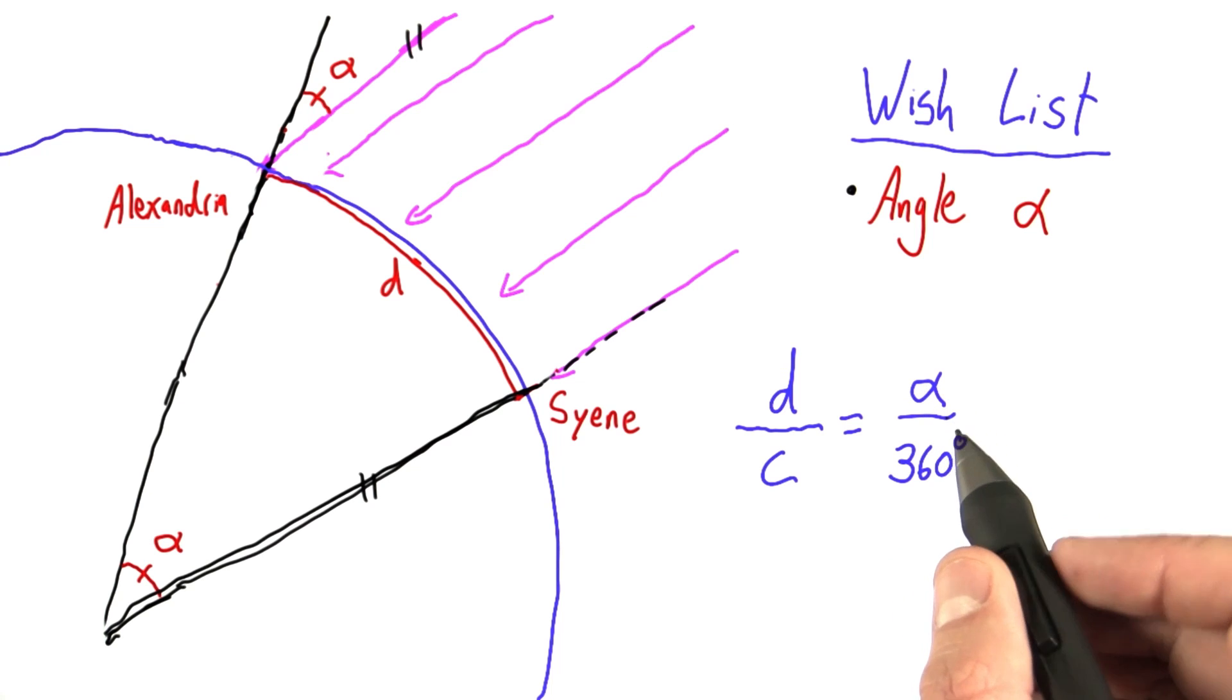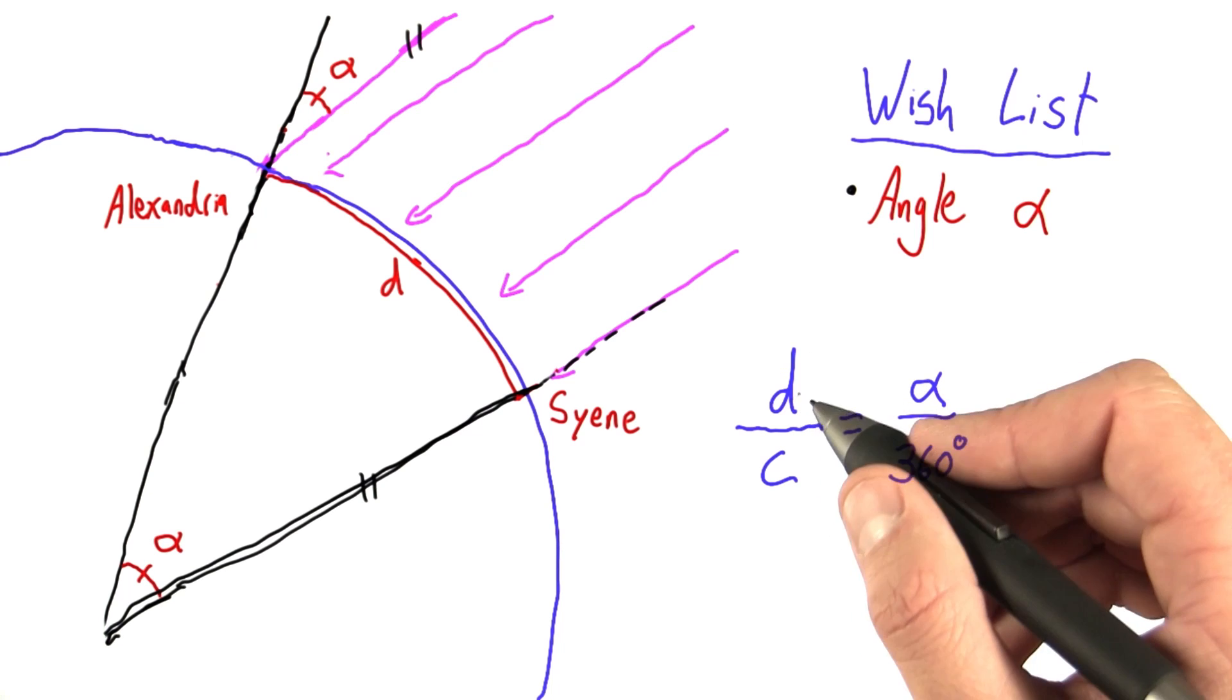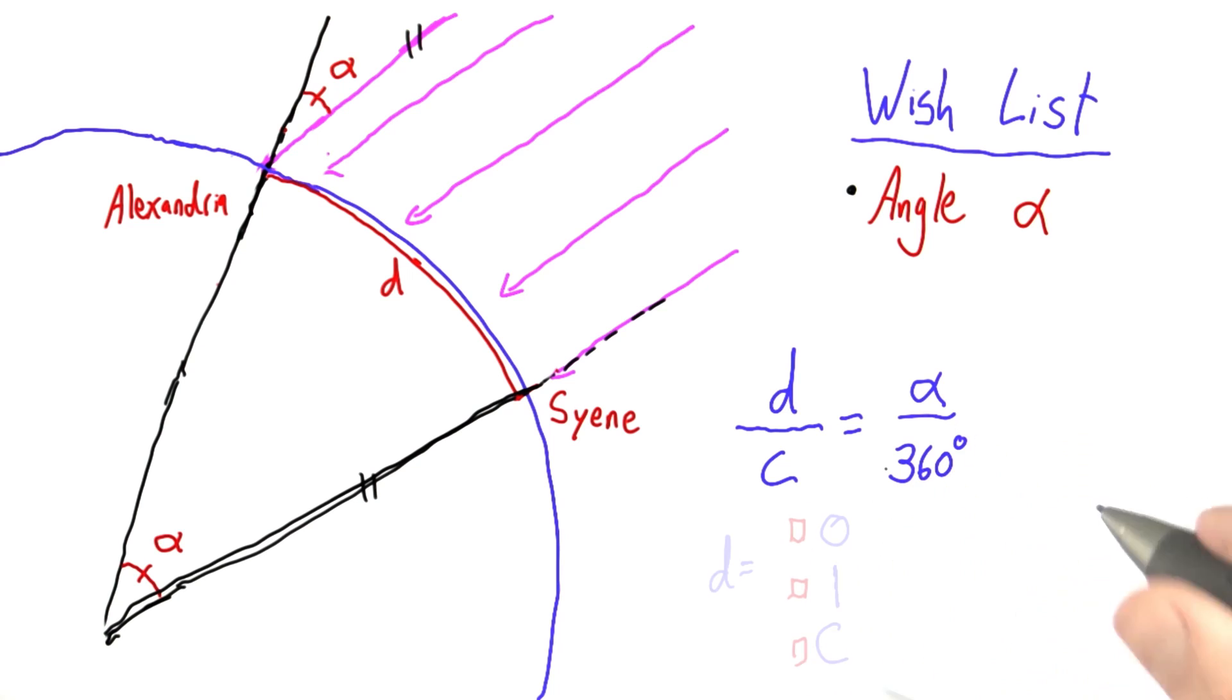Now, what if alpha were a full 360 degrees? What would d have to be for this formula to make sense? Check the appropriate box. Would d have to be 0, 1, or c, the circumference of the Earth? Right.